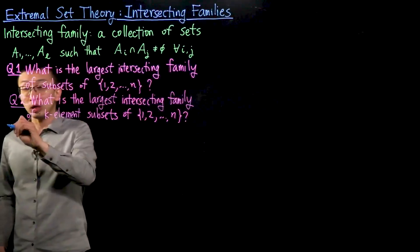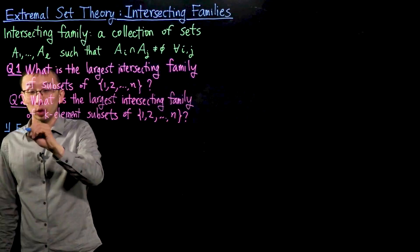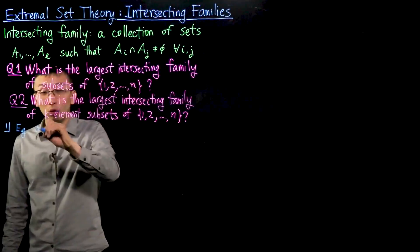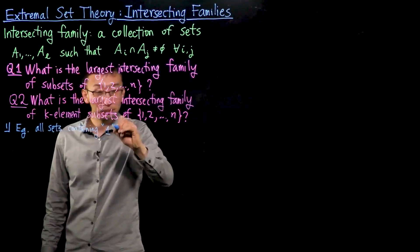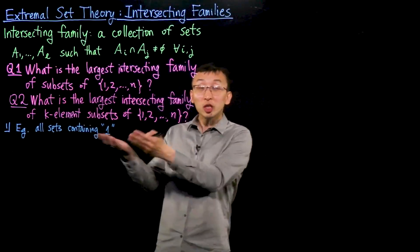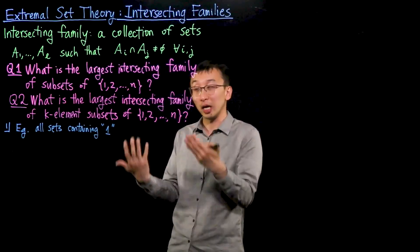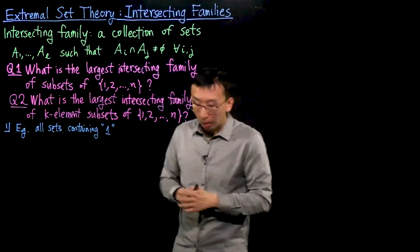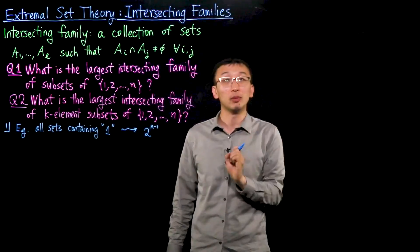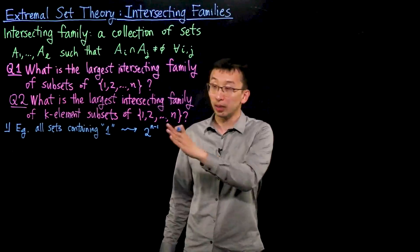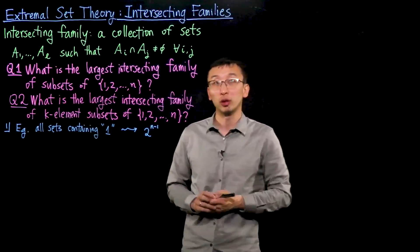The first question turns out to be fairly easy and we'll solve it as a warm-up. As an example, consider all sets containing the element 1. This collection of sets is intersecting because they all contain element 1, so every pair intersects in a set containing 1, which is in particular non-empty. This collection has size 2^(N−1), because once you fix element 1, the other N−1 elements can each independently be in or not in the sets.